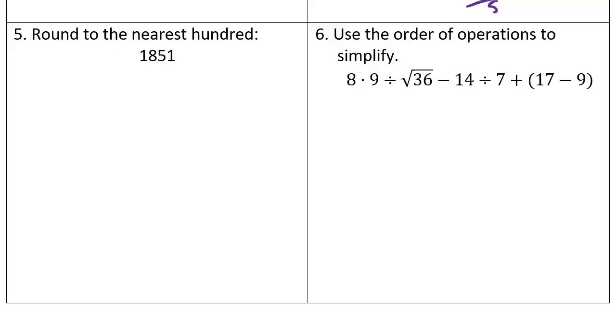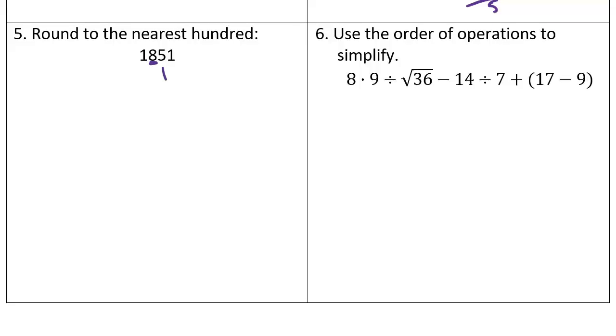The next one is a rounding off to the nearest hundreds, so this is our hundreds position. I want to look at the number to the right of that, and if that number is 5 or higher, we're going to bring this up. So we're going to add 1 to the 8, and then everything else will go to 0, so this is rounded off to the nearest hundreds.